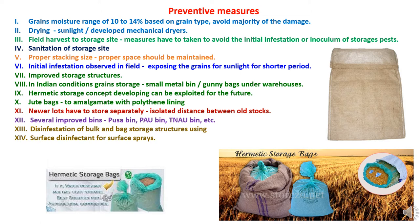Handling of grains should be proper and storage structures should not be damaged. Proper stacking size and wooden drainage should be maintained to avoid mechanical damage or to keep grain away from walls. A proper space between each stack should be maintained for monitoring and identification of any pest. Initial infestation observed in fields can sometimes be managed by exposing grains to sunlight for a shorter period. Using improved storage structures is important — in Indian conditions, grains are stored variedly from small metal bins to bulk storage in gunny bags under warehouses.